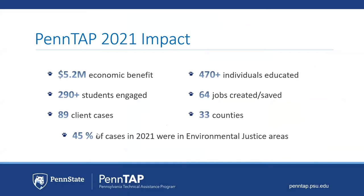Our impact is measured in several ways — first, economic benefit, mostly through energy cost savings and the grants or rebates that companies receive for their energy savings. Through webinars like today we help educate folks throughout the state. Last year we served 89 clients in 33 different counties throughout the Commonwealth. Almost half of which were in environmental justice areas, meaning those communities are economically disadvantaged.